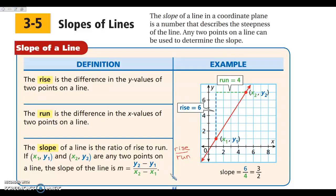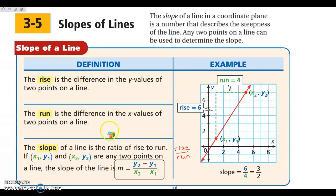Remember that the rise is your change in y — how far up and down do you go. Your run is your change in x — how far left and right do you go. When we look at our slope formula, we are looking at y2 minus y1 over x2 minus x1. It's our change in y over our change in x, and it can be any two points on the line to give you your slope.